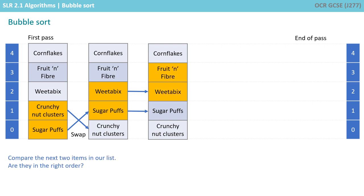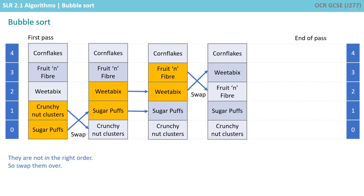We now compare the next two items in our list: Fruit and Fibre and Weetabix. Are they in the right order? Well, they're not in the right order, so we swap them over.